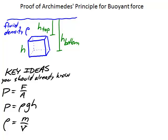Here we have the surface of some fluid — some liquid — that has a density rho. Under that fluid, under the surface, there is, for the sake of simplicity, a box shape. The area of the base of that box is A, and the height of the box is H. The height of the surface of the water above the top of the box I'm calling H-top, and the depth to the bottom of the box — or the height of the surface above the bottom of the box — is H-bottom.